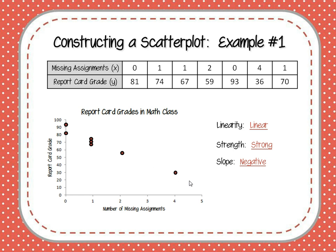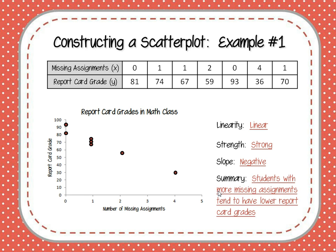We could go ahead and predict that a person who had five missing assignments would probably have an even lower grade, and that the grade would just get lower and lower as the number of missing assignments increases. To summarize: students with more missing assignments tend to have lower grades than students with fewer missing assignments.